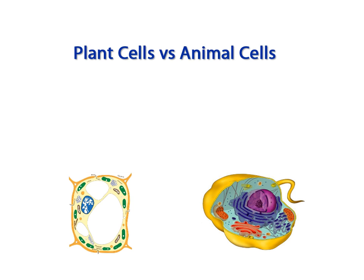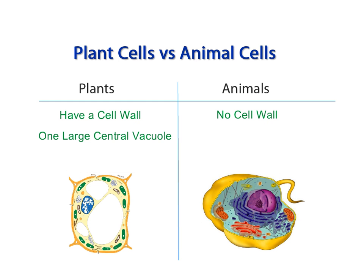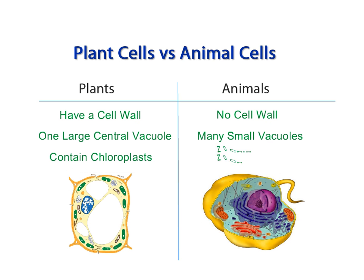You may also be asked some questions comparing plant cells to animal cells. Let's use a chart to make these comparisons, and be sure that you are comparing point for point. For example, if you state that plant cells have a cell wall, then you must also state that animal cells do not have a cell wall. Plant cells have one large central vacuole, while animal cells have many small vacuoles. Plant cells contain chloroplasts, while animal cells do not have chloroplasts. These are the three main comparisons that you may need to know.